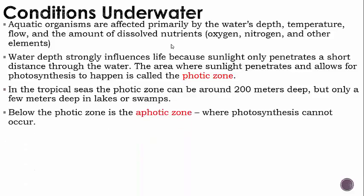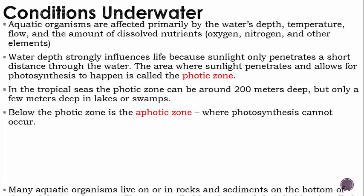Below the photic zone, where there is not enough light for photosynthesis to occur, we have the aphotic zone, meaning no light. This is where photosynthesis cannot occur.